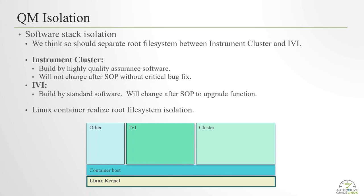The QM isolation architecture has three parts. The first part is software stack isolation. We think we should separate the root file system between the instrument cluster and IVI. The instrument cluster software stack requires software built with high-quality assurance and will not change after SOP without a critical bug fix. On the other hand, the IVI software stack requires standard software and will change after SOP to upgrade functions. In this case, we should separate the root file system between both containers. Linux container realizes root file system isolation.